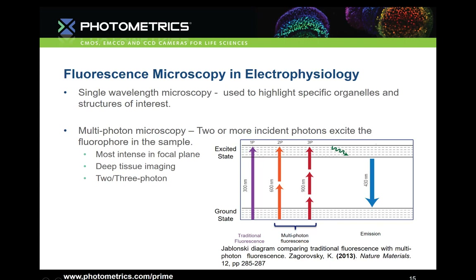Fluorescence microscopy has several variations in electrophysiology, and the Jablonski diagram can be used to explain what's happening. In single wavelength microscopy, a single photon of high-energy light is used to excite electrons in the fluorophore, taking them from the ground state to the excited state. To get rid of that additional energy, they vibrate, rotate, and most notably fluoresce at a wavelength specific to that fluorophore. Two-photon microscopy — also referred to as multi-photon microscopy — capitalizes on the phenomena that successive photons of lower energy can produce the same fluorophore emission response as one pulse of the higher-energy photon.